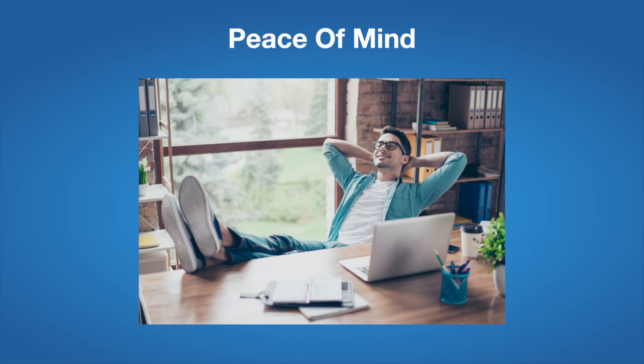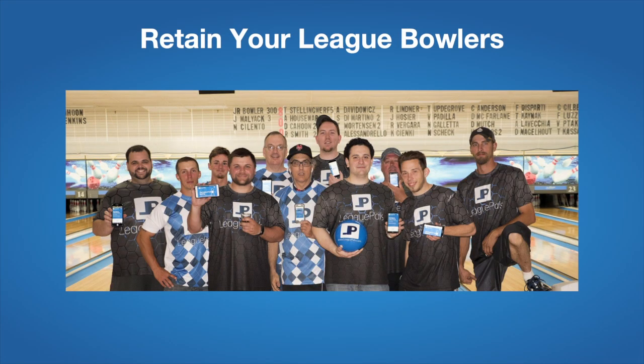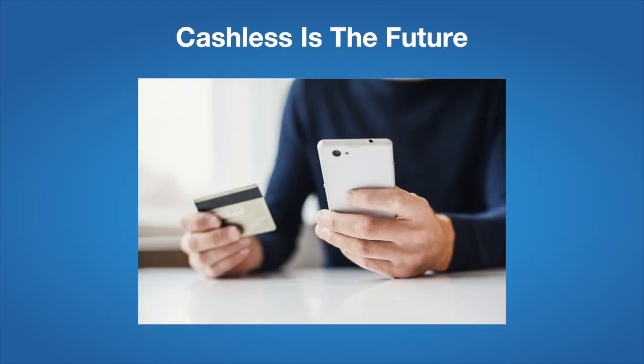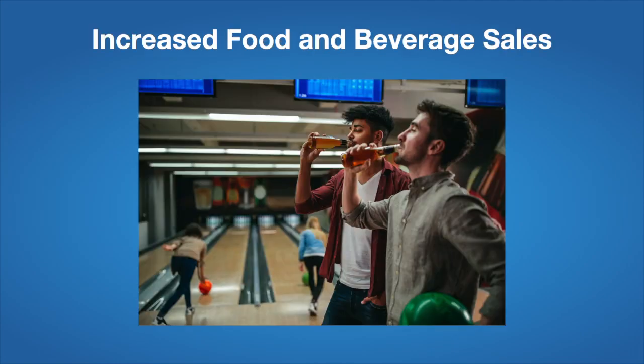Save time and money by streamlining or automating all league management tasks so the center can focus on more important things. Offer a modern league experience that engages the league bowler and keeps them coming back to your center for more leagues. The digital envelope serves as a great loss prevention tool, easily prompting you of bowlers who are behind in dues. Get paid in full, on time, and effortlessly from your bowler straight to your bank. Online league payments eliminate inefficiencies of managing cash and unlock invaluable data insights into your league bowlers. Boost food and beverage sales by up to 20% due to the fact that bowlers have more cash in their pockets to spend inside your bowling center when using online payments for their league dues.